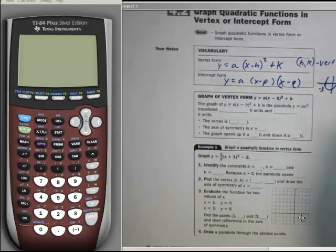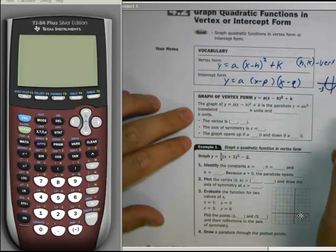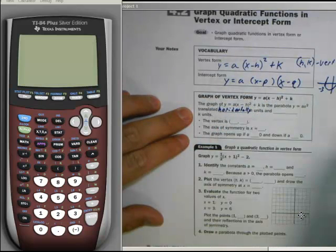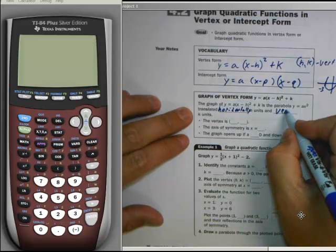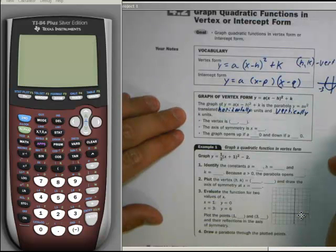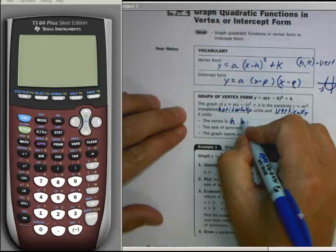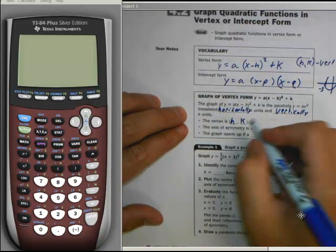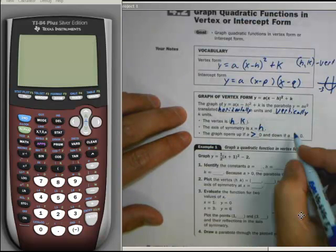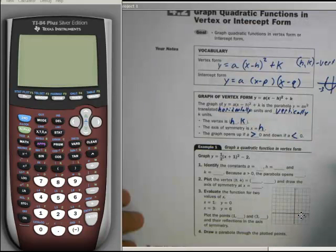If we take a look at the graph of the vertex y equals a times x minus h squared plus k, it is translated horizontally h units and vertically k units. That's where that vertex moves. The axis of symmetry is going to be x equals h. And the graph opens up if a is positive and down if a is negative, just like in the previous one.